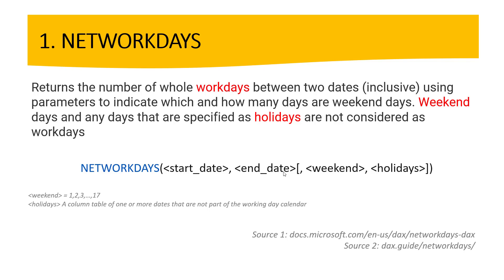Here is also the syntax — four different pieces. We have the start date and end date, which are the date boundaries. We also have another component called weekend, which is a number between 1 and 17. For example, 1 represents Saturday and Sunday, 2 represents Sunday and Monday, and 17 is just Saturday. The holidays parameter is a column or table of one or more dates that are not part of the working day calendar.